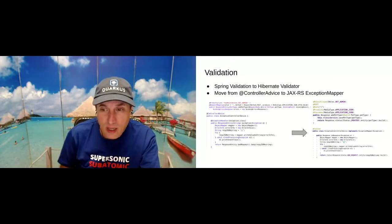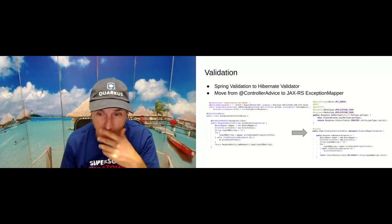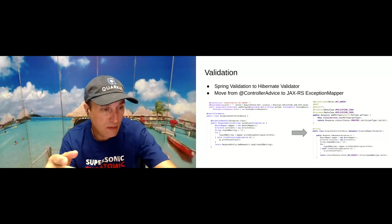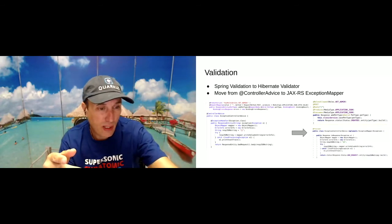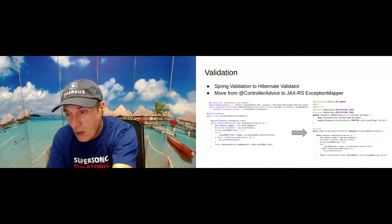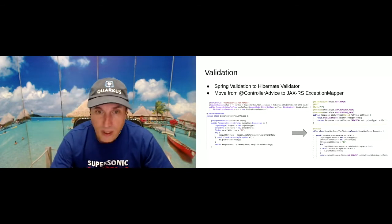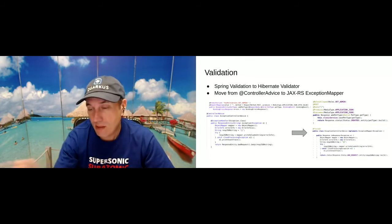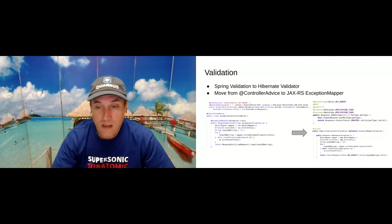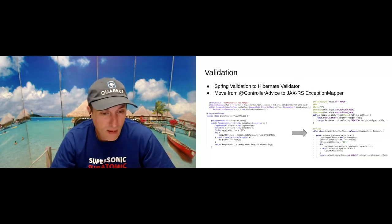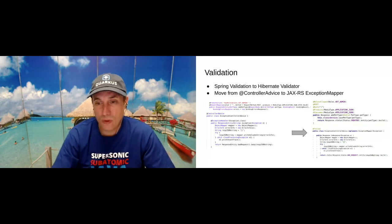Both use @Valid annotations for each attribute. The difference is in the way exceptions are consumed or treated. In Spring you create a @ControllerAdvice class with an @ExceptionHandler specifying which exception you are treating. With JAX-RS ExceptionMapper you simply implement ExceptionMapper and specify the exception class. There's not a lot of difference between both, so it was very, very easy to implement.